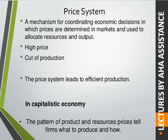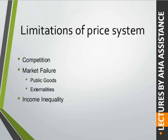There are some limitations in the price system. First of all, there is competition. For example, if one company has a price of 20 rupees and another company has a price of 18 rupees, consumers will obviously select the 18 rupees option. So competition is a limitation of the price system.